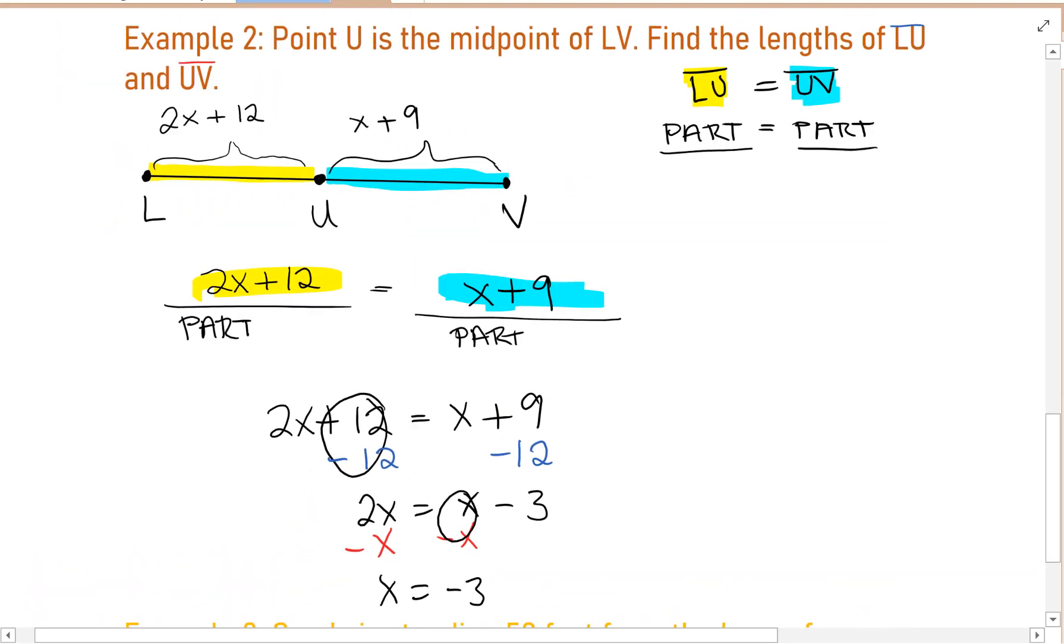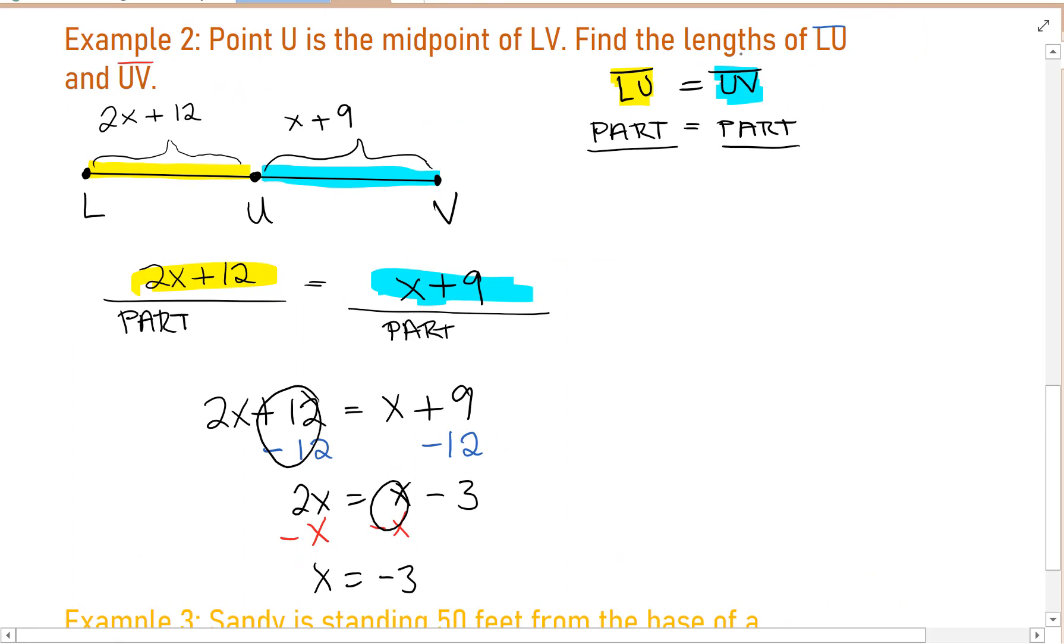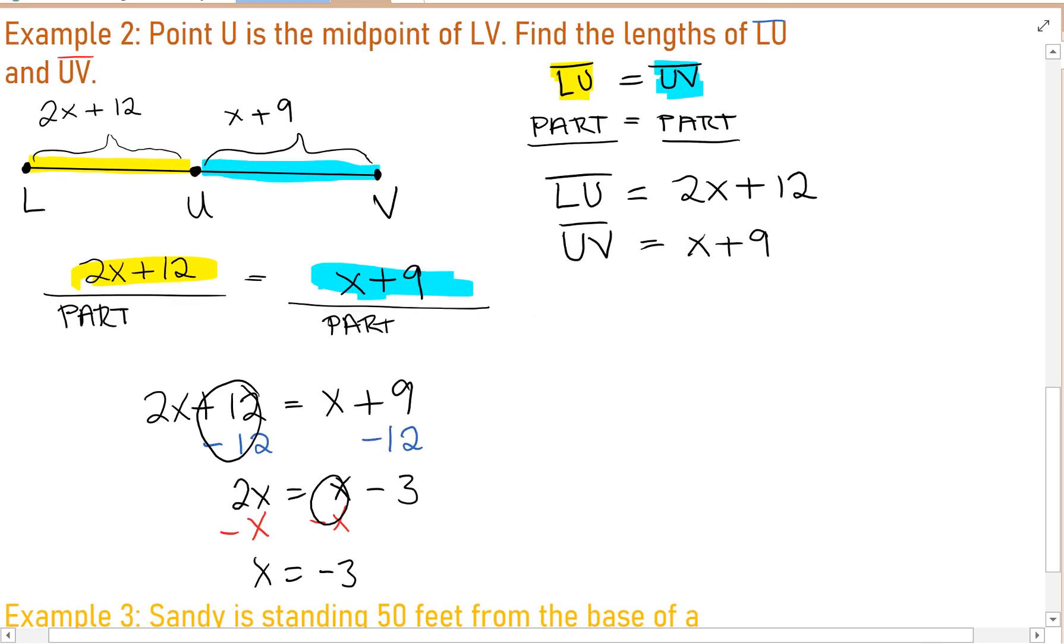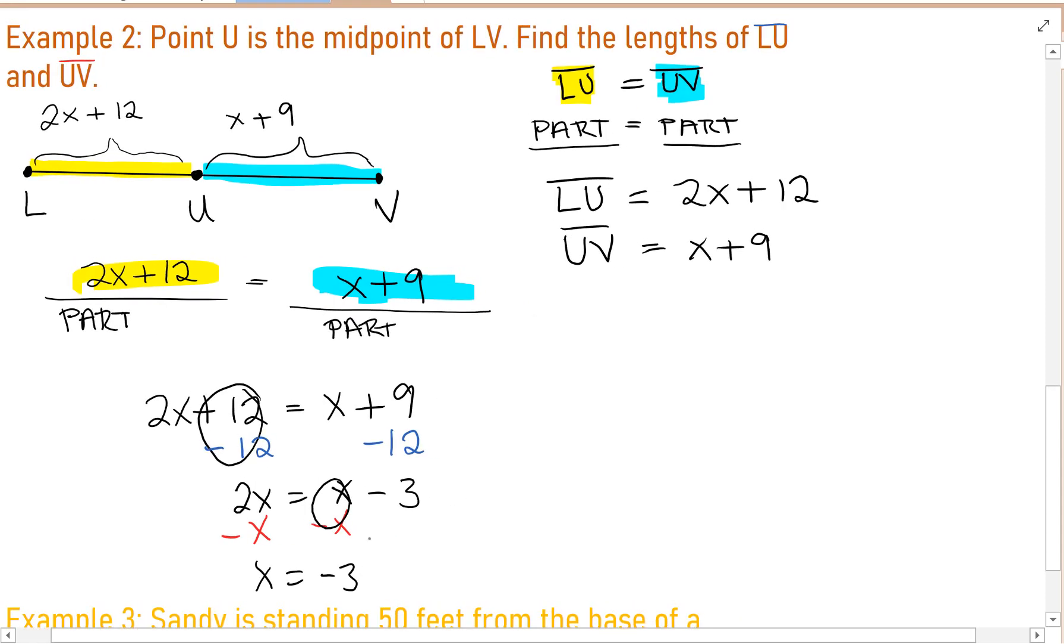But I didn't complete the problem, because it asked me to find the lengths of LU and UV. LU was this yellow portion, 2X plus 12. And UV was the blue portion, X plus 9. So in order to find their actual lengths, I need to plug in negative 3 for X. LU is equal to 2 times negative 3 plus 12. Negative 6 plus 12 equals 6. Now let's test UV. Plug in negative 3. Negative 3 plus 9 is also 6.